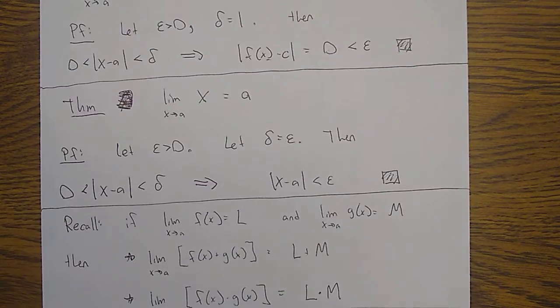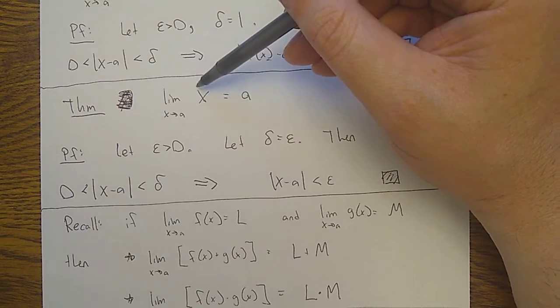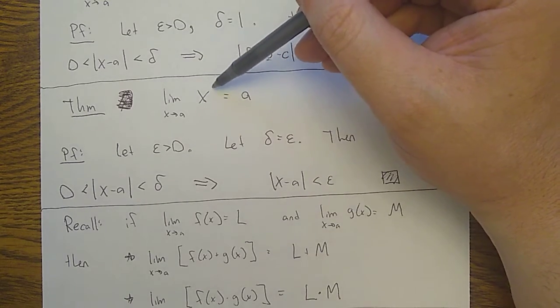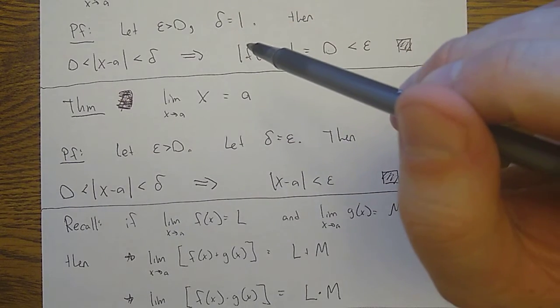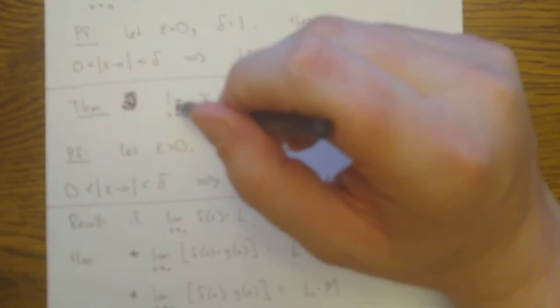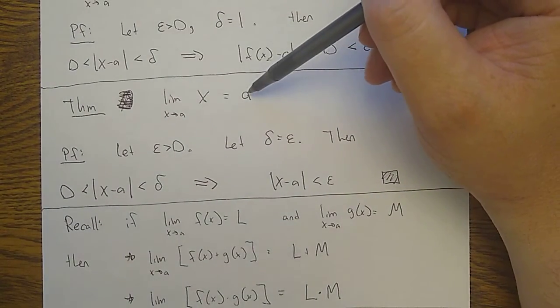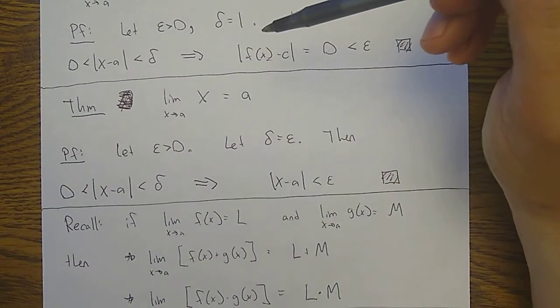Now the second easiest limit — and this is another very simple polynomial — this is just x to the one power. I'm claiming that the limit as x goes to a of x is a, which seems like a very obvious statement. As x gets really close to a, x should be really close to a.